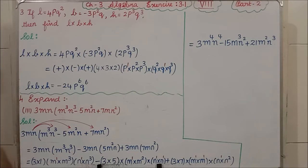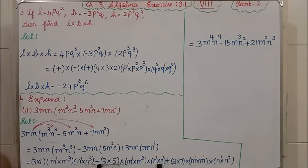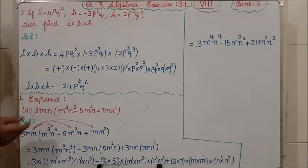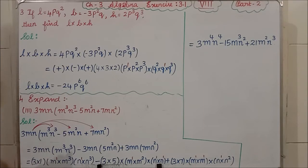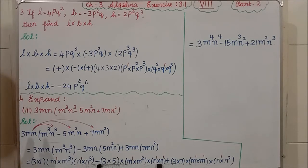Next, the fourth question, third subdivision. The first and second subdivisions you will do as homework. Here: 3MN is a monomial. M³N³ − 5M²N + 7MN² has three terms, so it is a trinomial. We are going to multiply monomial into trinomial.